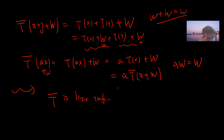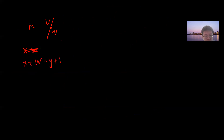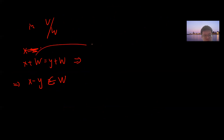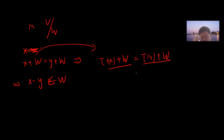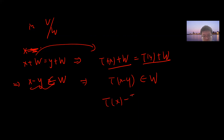We also need T-bar to be well-defined. In V/W, x + W equals y + W means x − y belongs to W. We need to check the map is consistent: x maps to T(x) + W and y maps to T(y) + W. Since x − y is in W, T(x − y) = T(x) − T(y) belongs to W, so T(x) + W equals T(y) + W. So the map is well-defined.